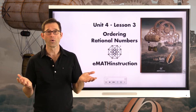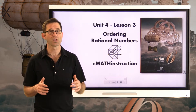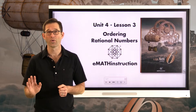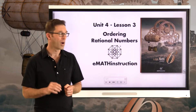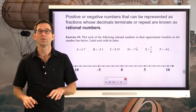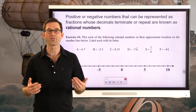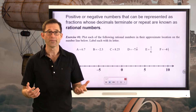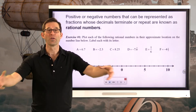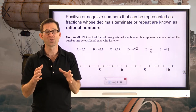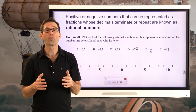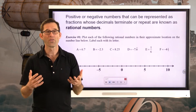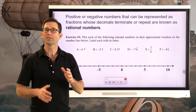Just a few lessons ago we ordered positive numbers, and ordering means taking two numbers and determining which one is greater and which one is less. Positive or negative numbers that can be represented as fractions whose decimals terminate or repeat are known as rational numbers. Basically, every type of number you've seen so far, when put together, those are the rational numbers — primarily because they are ratios. Today we want to see how we can compare them.